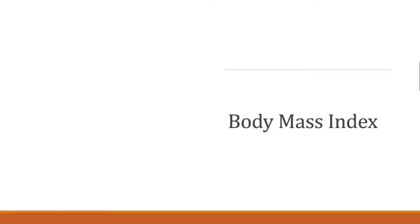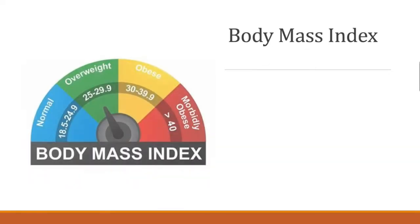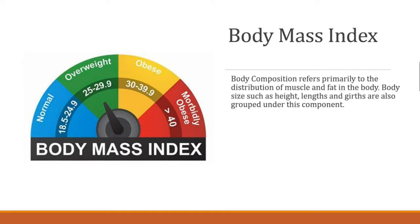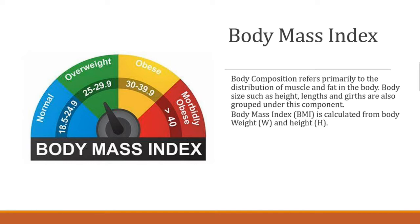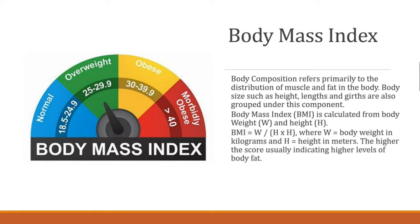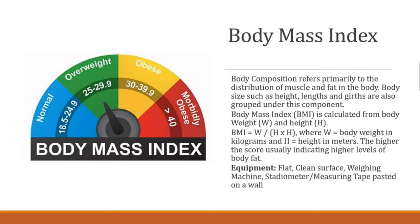Body Mass Index. Body composition refers primarily to the distribution of muscle and fat in the body. Body size such as height, lengths, and girths are also grouped under this component. BMI is calculated from body weight W and height H. BMI = W / (H x H), where W is body weight in kilograms and H is height in meters. The higher the score usually indicates higher levels of body fat.